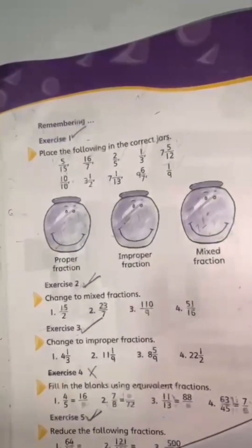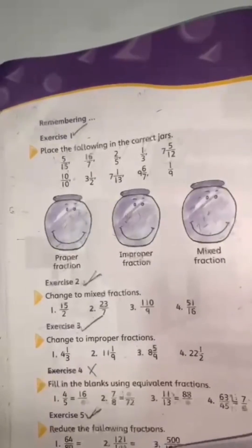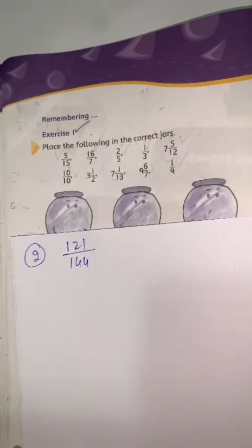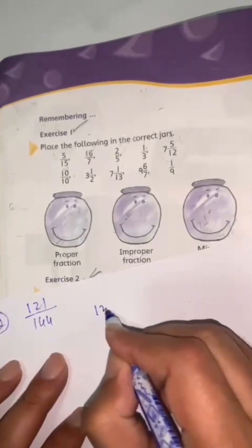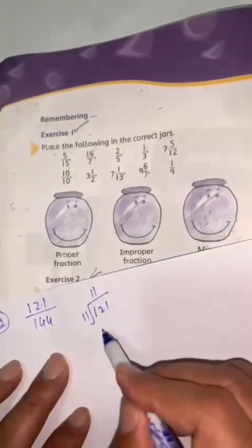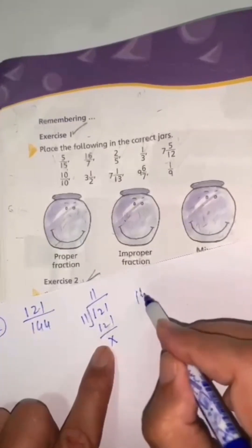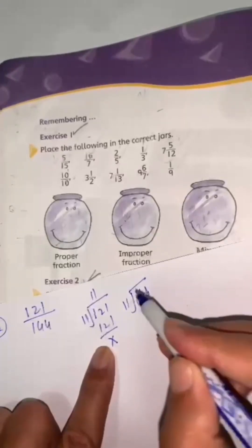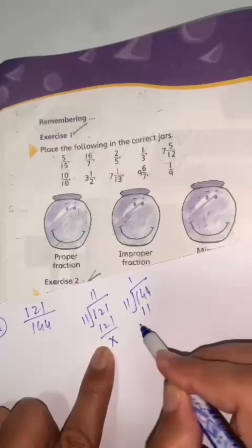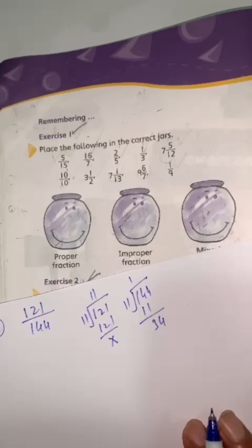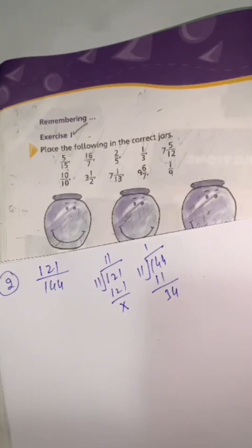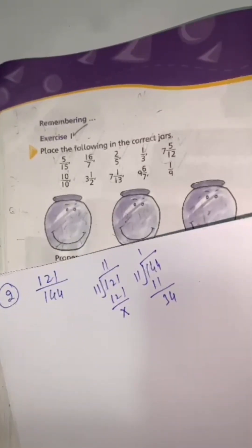Question number 2: 121 divided by 144. You can check: 121 is only from the 11 times table — 121 divided by 11 is 11. But 144 is not divisible by 11, so reduction is not possible here. 121 divided by 144 is already in its simplest form.